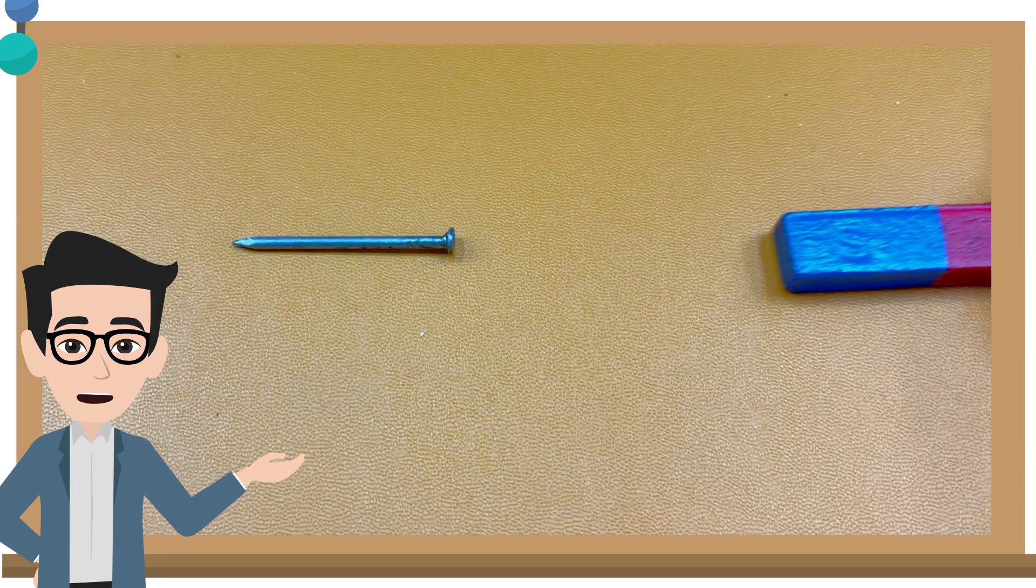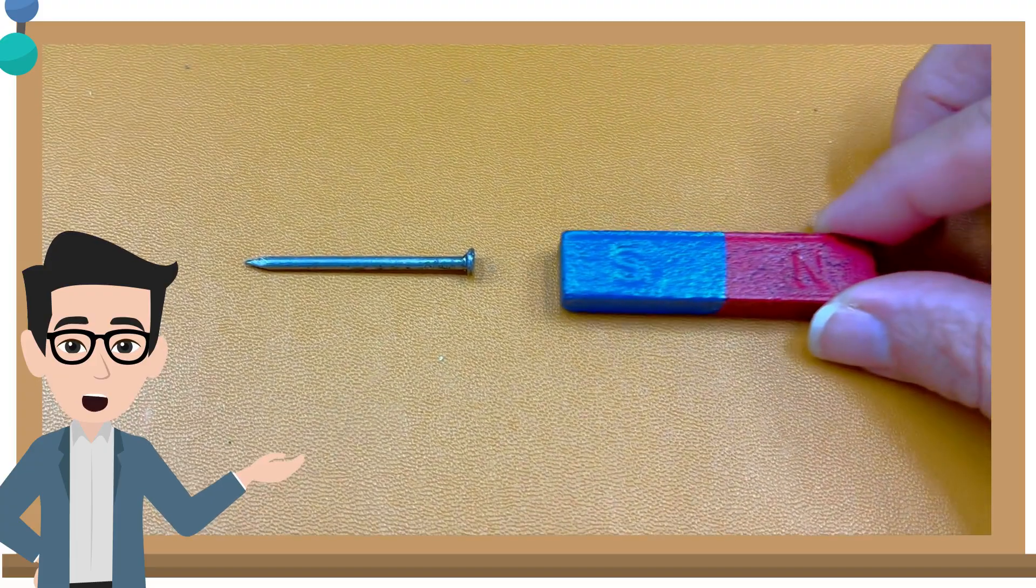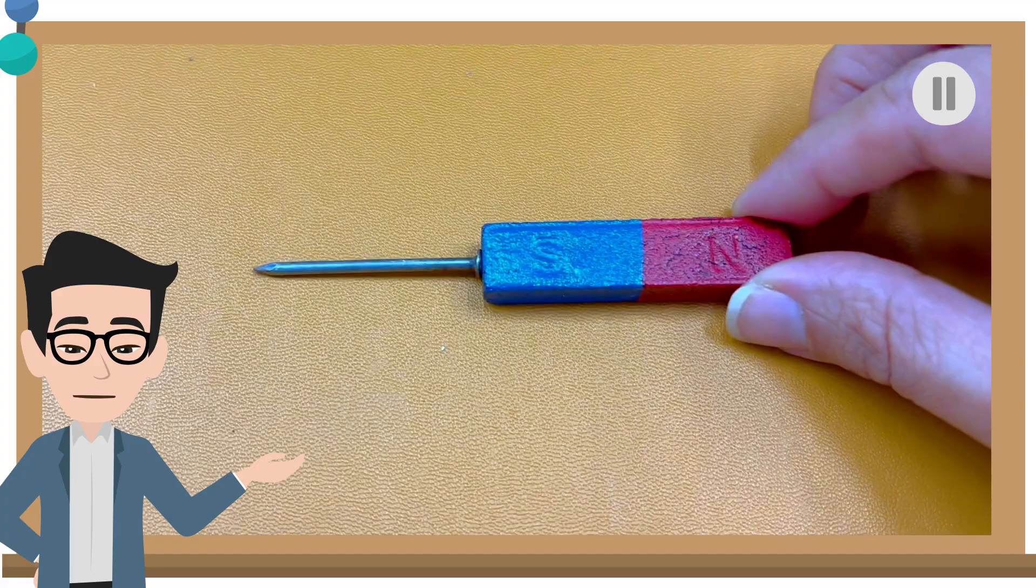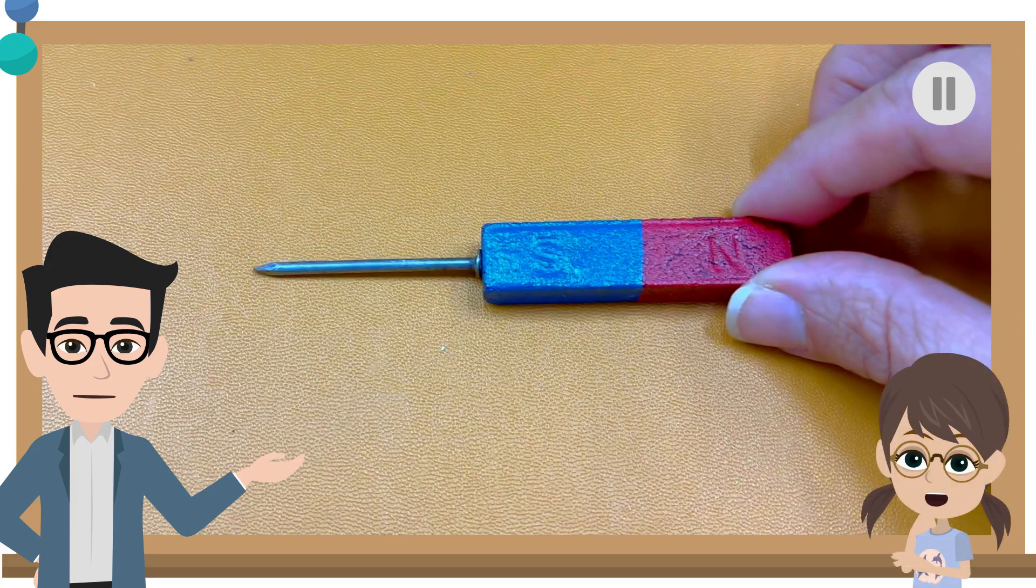Next, bring a bar magnet near the iron nail. Observe. What did you observe? Pause and discuss. The iron nail is attracted to the bar magnet.